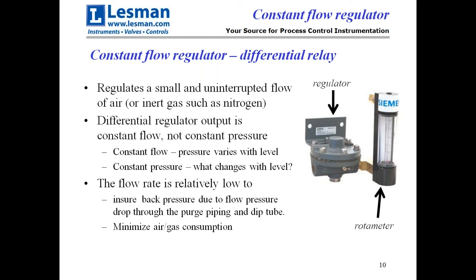When you have constant flow going out, the pressure in the line varies with level because the flow is held constant. This is not like the regulator on your air compressor that maintains constant pressure while flow varies. In our case, we want to measure the pressure, so we create a constant flow. This is done by looking at the differential because, according to Bernoulli's equation, flow varies with the square root of the pressure. If you maintain that, it correlates to the flow going out.